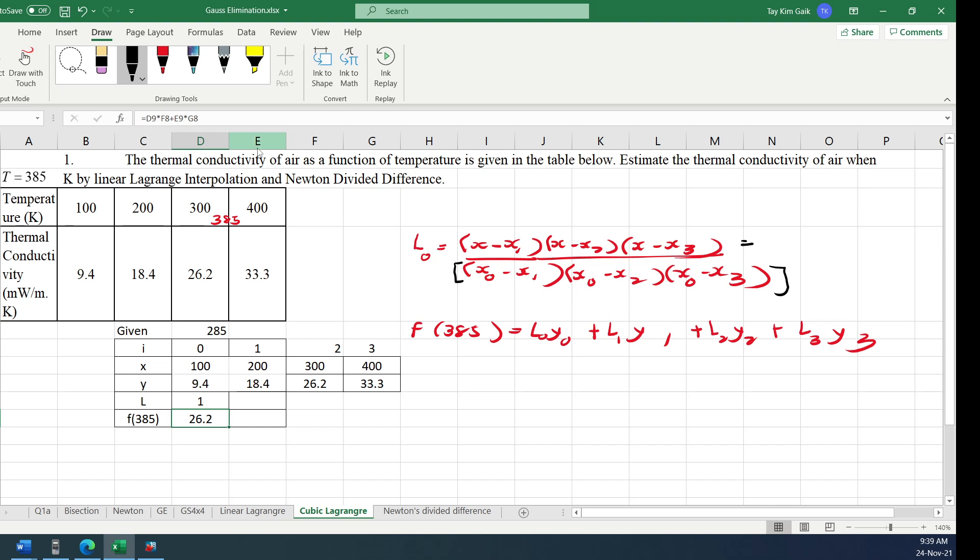And then once you put divide, divide, divide, in Excel the divide is a backslash. If you don't put bracket, they will only divide this one. These two will become multiplication. So make sure denominator here bracket. You key in the numerator, you select, then backslash. Put a bracket first and then you paste inside the bracket.